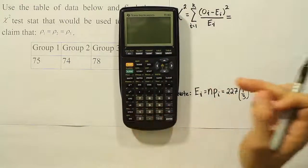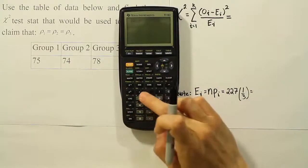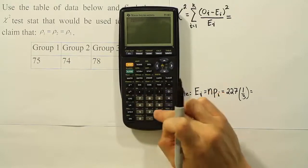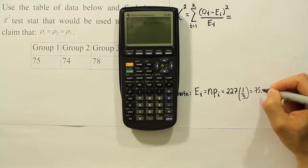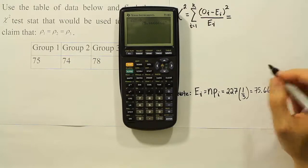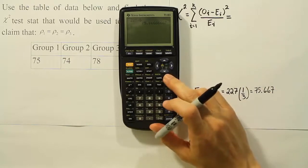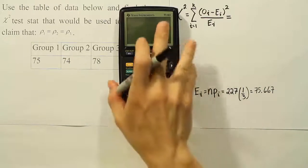So we will have 227 divided by 3, and it's going to give us 75 point, let's just do 667. So we have a few decimal places there. It's 6 repeating, but we'll put 3 decimal places. That should suffice for this calculation.